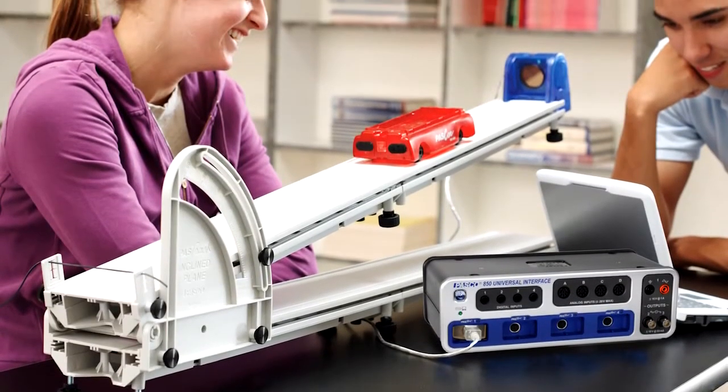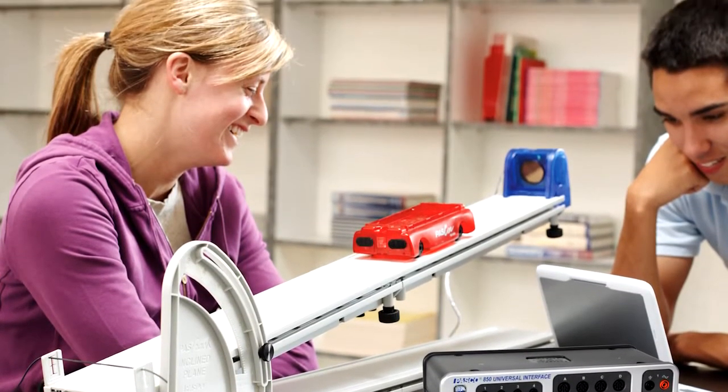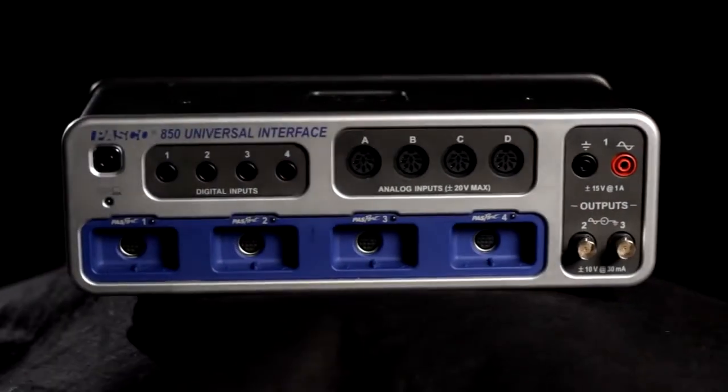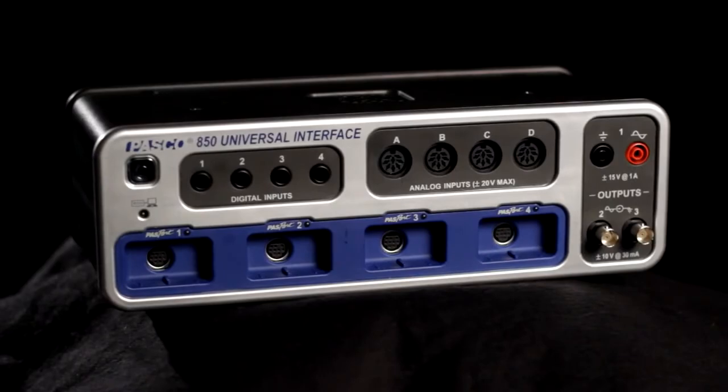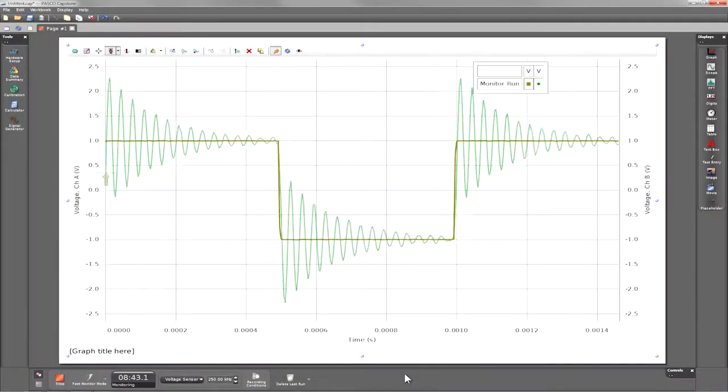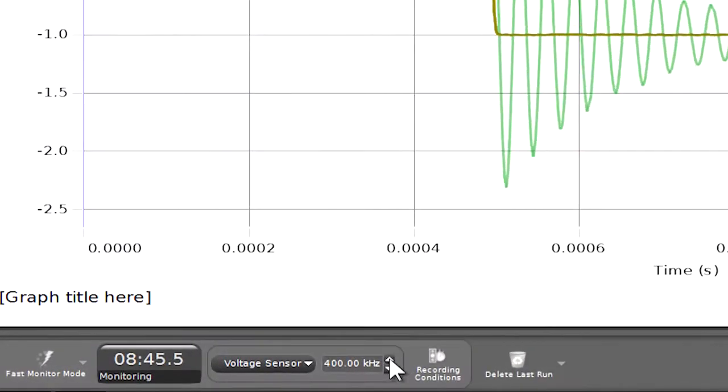Together, this solution will serve as the foundation of your modern lab environment. The 850 universal interface is the most powerful interface that Pasco has ever brought to the student classroom. With a maximum sampling rate of 10 megahertz, students can do a variety of circuit and signal analysis all the way up to the low radio frequencies.